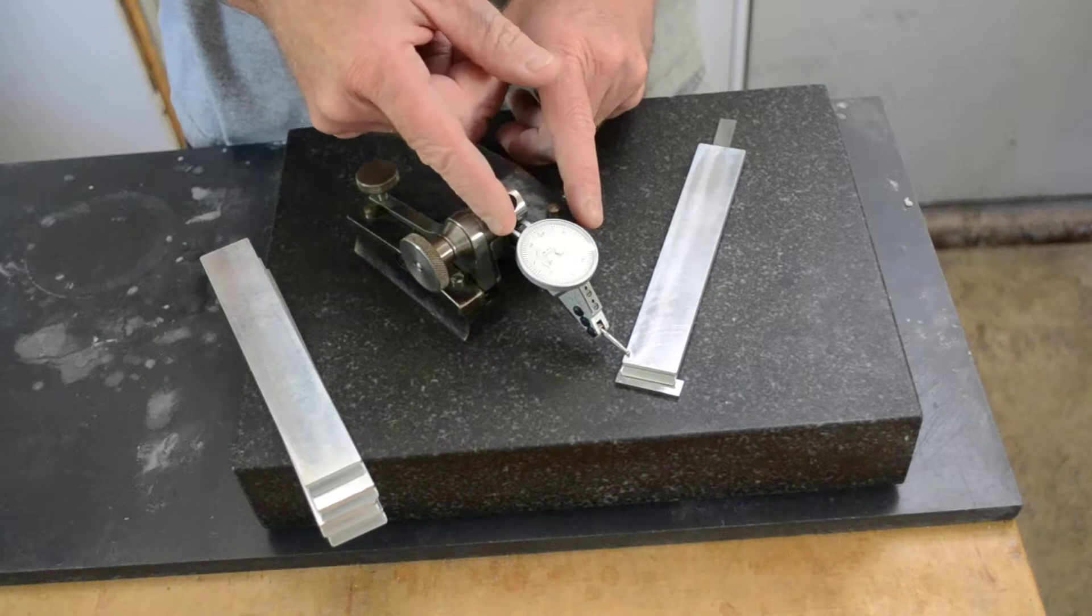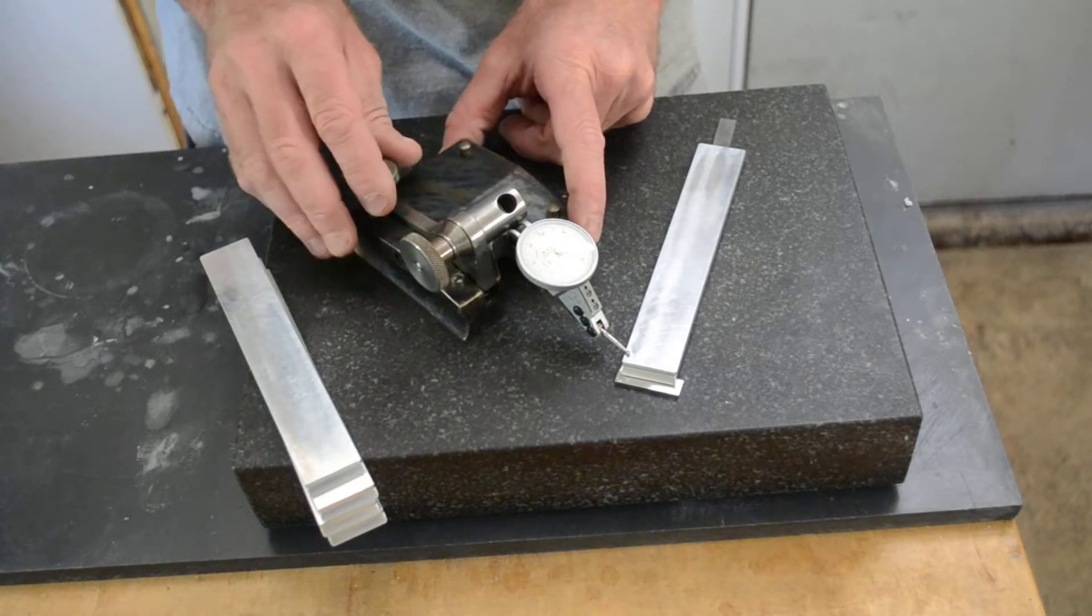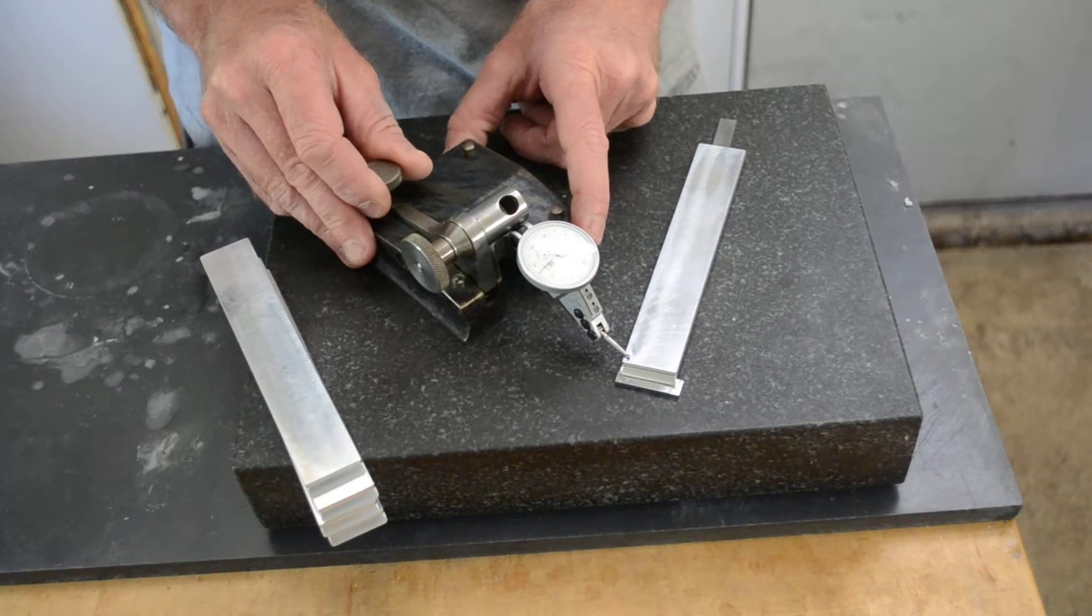The indicator is a tenths indicator, so each number is a thousandth of an inch and ten marks showing the tenths in between them.